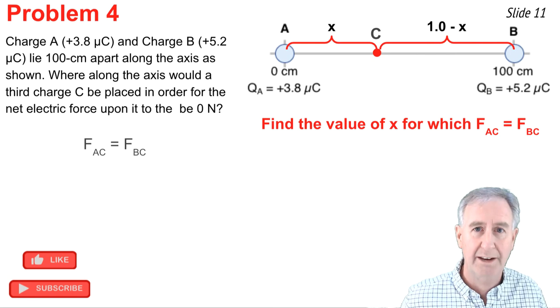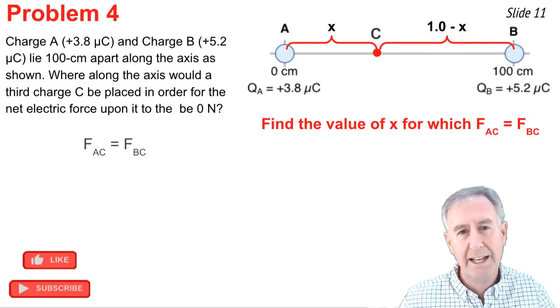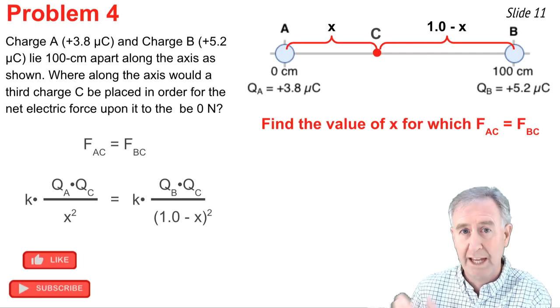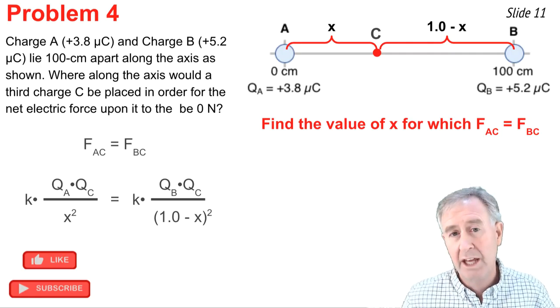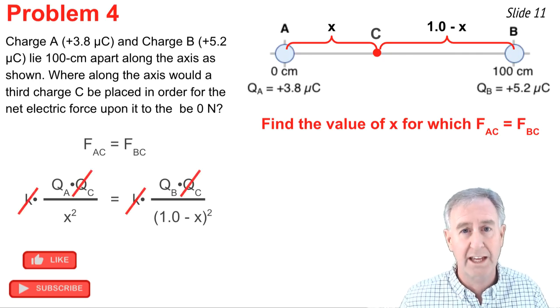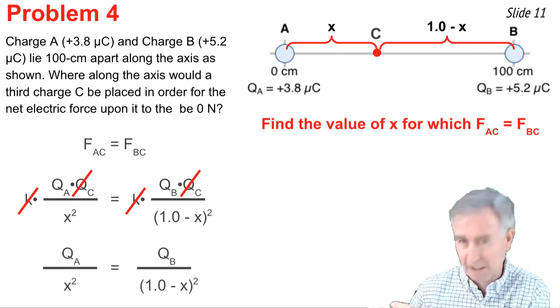So I begin the problem like that by saying that the force of AC equal the force of BC, and I can find these forces using coulombs law. So I write the expression for FAC and FBC as shown. And I can simplify this equation. I can cancel out the K's and I can cancel out the QC's, and the whole equation simplifies to this.